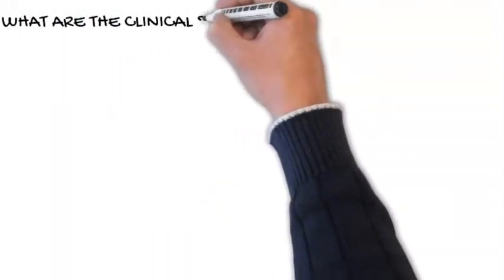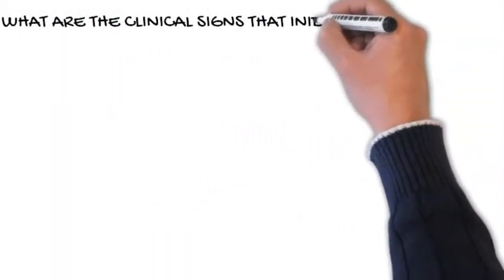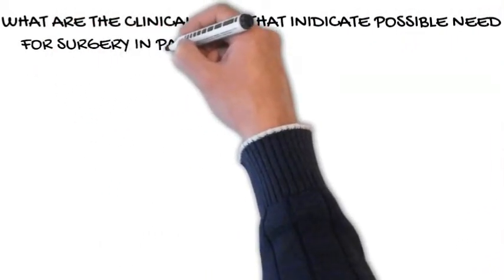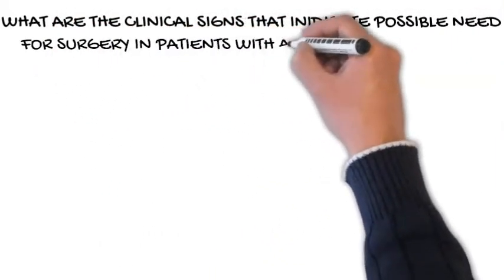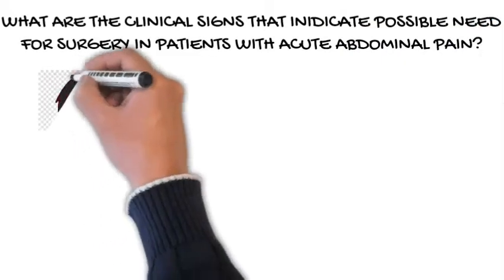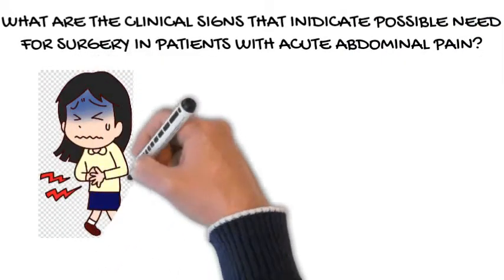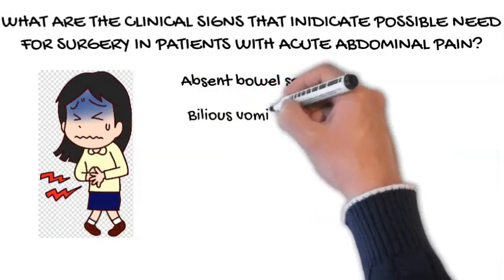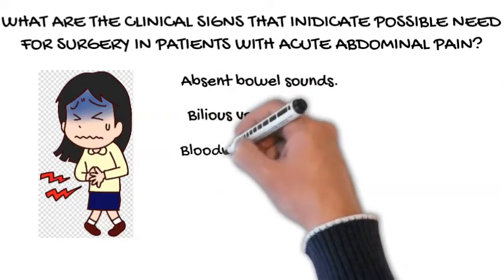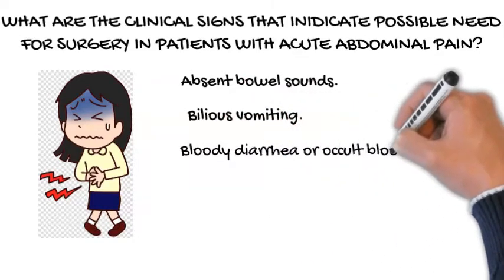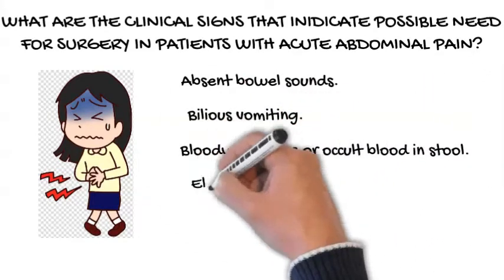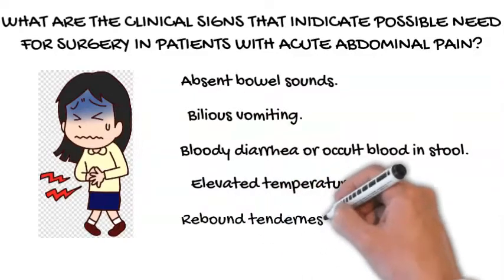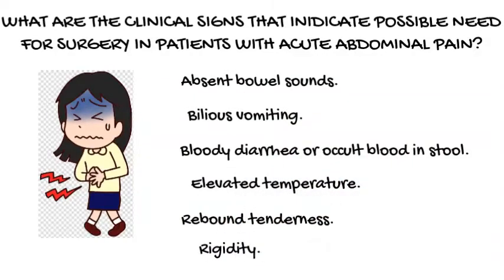What are the clinical signs that indicate a possible need for surgery in patients with acute abdominal pain? The signs are: absent bowel sounds, bilious vomiting, bloody diarrhea or occult blood in stool, elevated temperature, rebound tenderness, and rigidity.